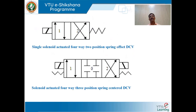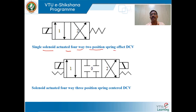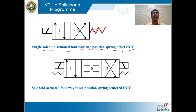We shall draw a symbol for a single solenoid actuated four-way two-position spring-offset directional control valve. Two-position: position 1 and 2 shown by two squares. A spring is provided on one side of the valve and a single solenoid on the other, where current flows to the coil energizing it to actuate the valve.